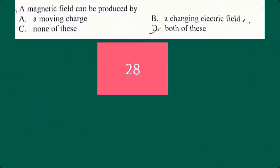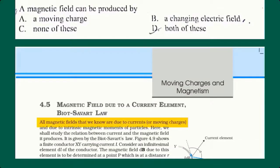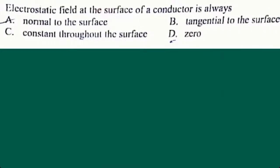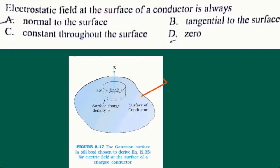A magnetic field can be produced by: from Biot-Savart law, we know that all magnetic fields are due to moving charges. So magnetic field can be produced by a moving charge. In option B, a changing electric field accelerates positive charges, meaning the charge is moving. So options A and B — both a moving charge and a changing electric field — can produce a magnetic field. The electrostatic field at the surface of a conductor is normal to the surface of the conductor.